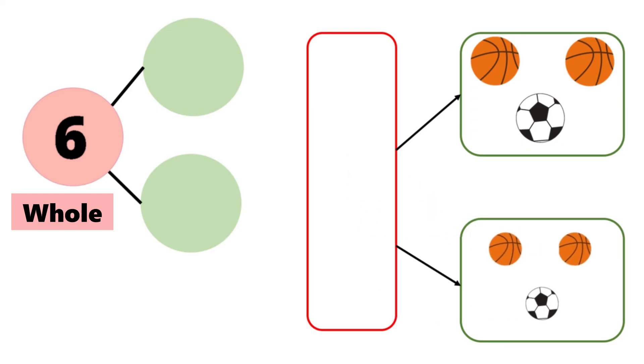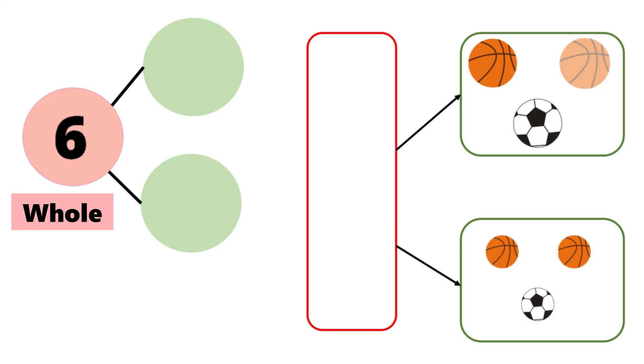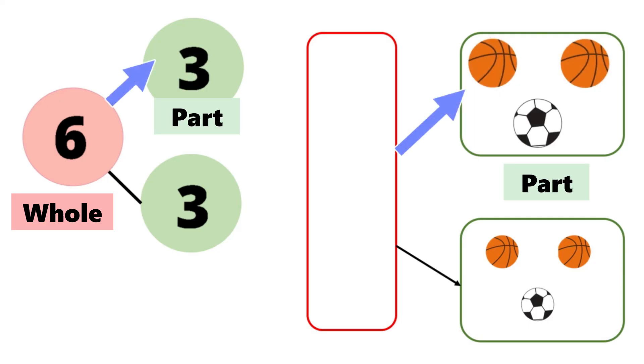How many balls are big? One, two, three. How many balls are small? One, two, three. So the same whole six can be broken up into three and three.